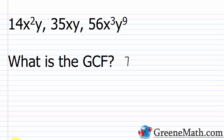Once we have the number part worked out, we think about the variable parts. Two questions to ask yourself: number one, is the variable present in each term? Here I have x, x, and x. I have y, y, and y. So I know I can put an x and a y in the GCF. Now, what will the exponent be on each? It's going to be the smallest exponent that appears on any of the copies.